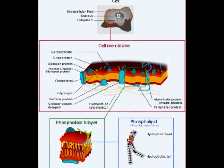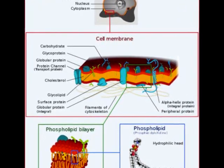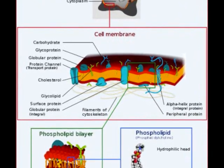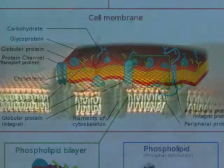In the eukaryotic cell, the cell membrane is composed of a phospholipid bilayer with embedded proteins. It is what separates the cell from the outside environment. The membrane is differentially permeable, meaning it controls what enters and leaves the cell.